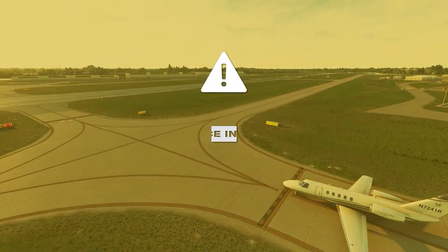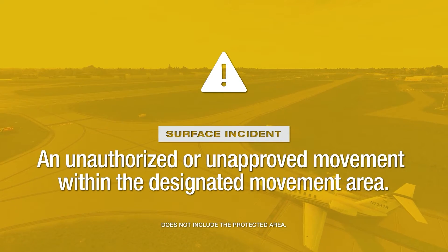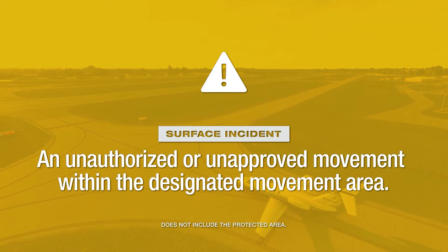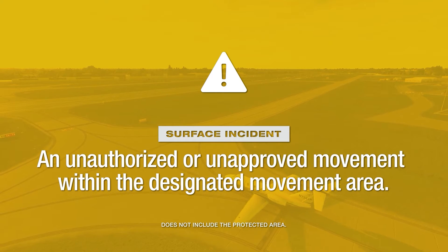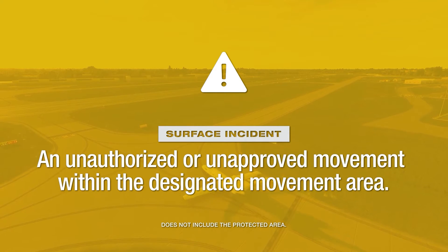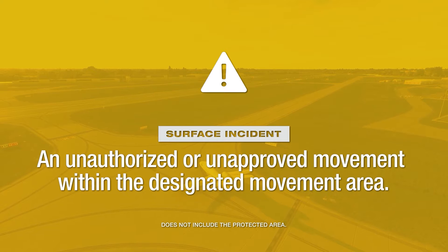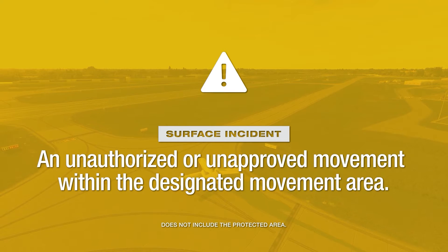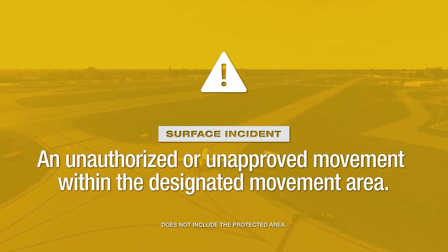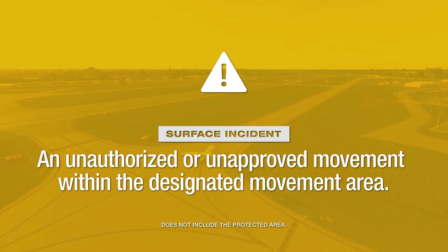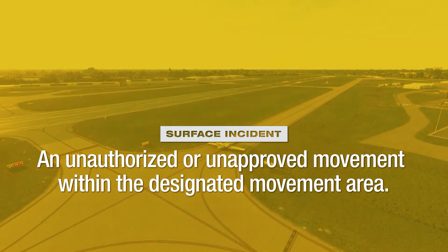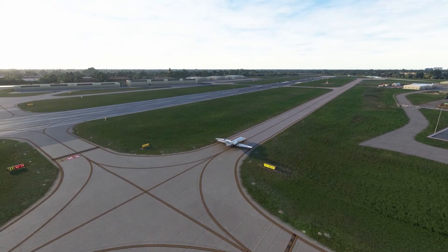If the movement area is entered without ATC authorization, you have committed a pilot or vehicle pedestrian deviation known as a surface incident, or SI. A surface incident is an unauthorized or unapproved movement within the designated movement area that does not include the protected area.